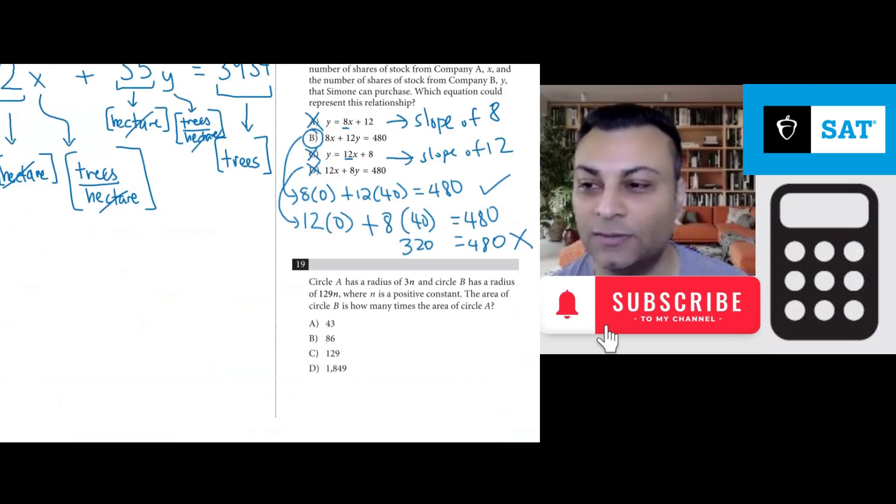Let's go to 19. Circle A has a radius of 3n, and circle B has a radius of 129n, where n is a positive constant. The area of circle B is how many times the area of circle A?